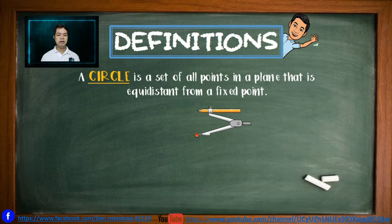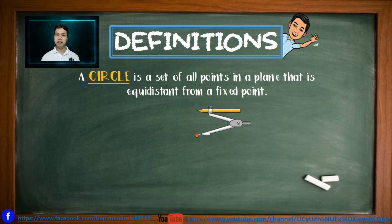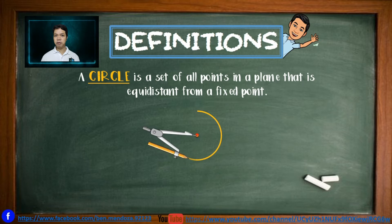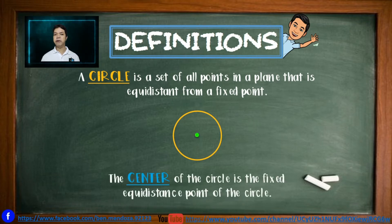So what is a circle? A circle is a set of all points in a plane that is equidistant from a fixed point. When we speak of the word equidistant, it means with equal distance from that fixed point. Looking at the animation, we form a circle as the set of points equidistant from a fixed point — and that fixed point is called the center.